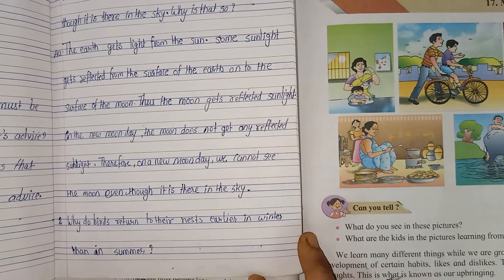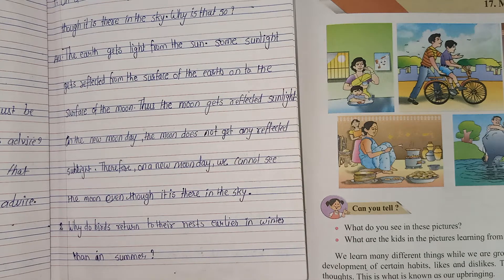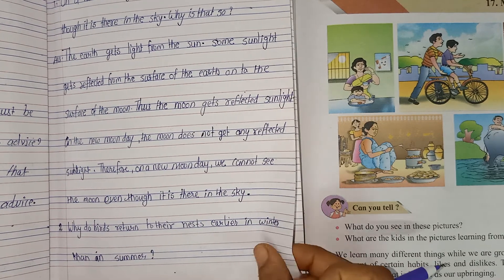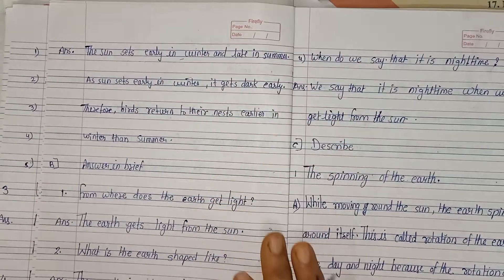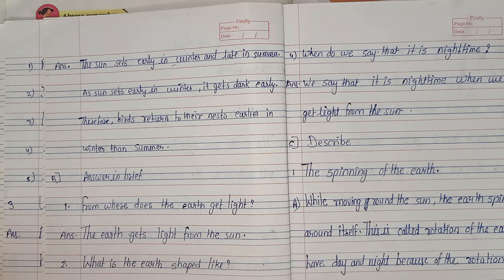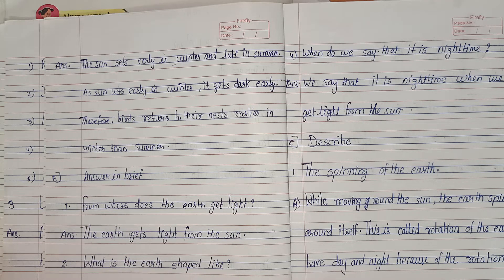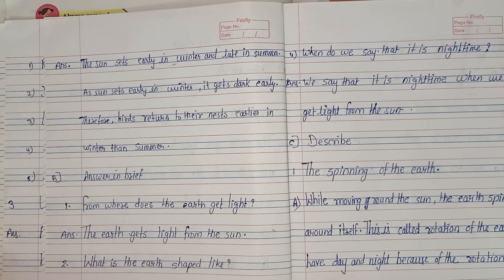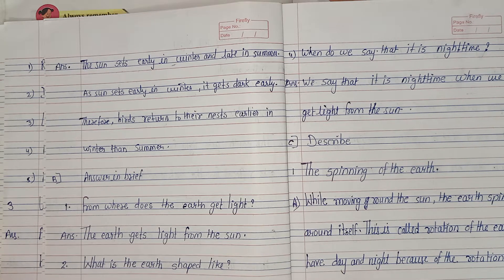Now we will see the next question. Why do birds return to their nest earlier in winter than in summer? Answer: the sun sets early in the winter and late in the summer. As sunset happens early in winter, it gets dark early. Therefore, the birds return to their nest earlier in the winter than in the summer.